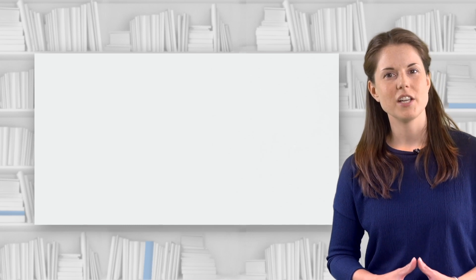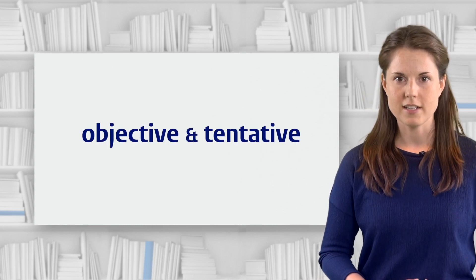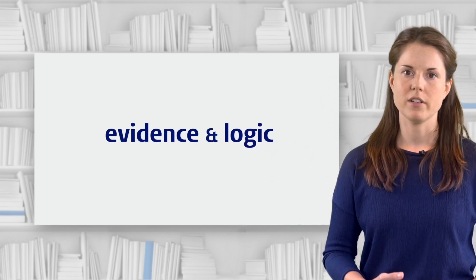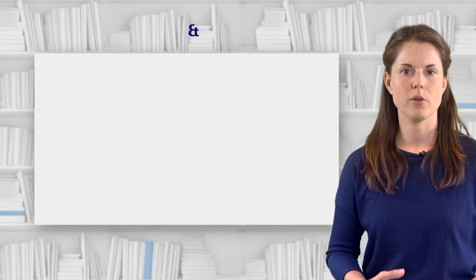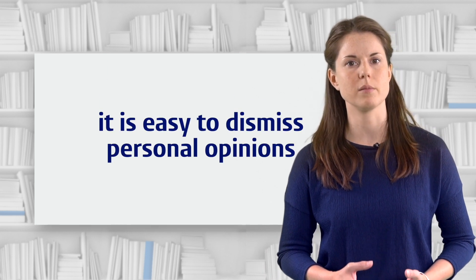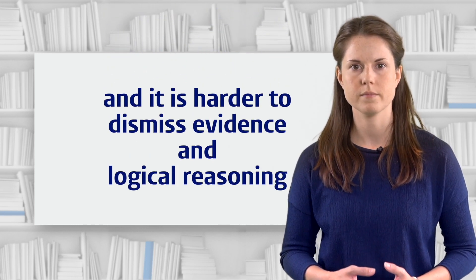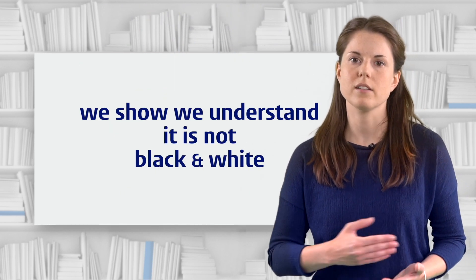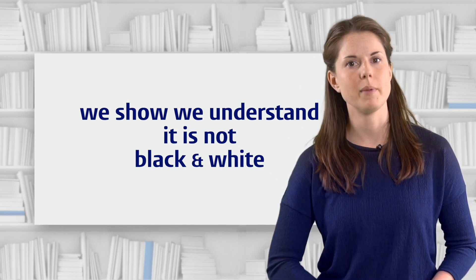So in this video we've looked at how to be objective and tentative in your writing. Remember that in academic writing we always use evidence and logic to make a point, not emotion or opinion — and that means we use objective, impersonal language. Objective writing is strong writing because it's easy to dismiss personal opinion, but it's much harder to dismiss evidence and logical reasoning. When we combine that with tentative language, we also show that we understand that not everything is black and white, and that makes our writing even stronger. See you next time.